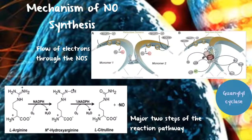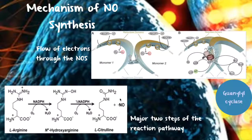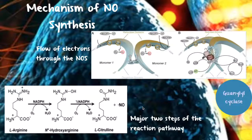In the second step, the enzyme oxidizes N-hydroxy-L-arginine to L-citrulline and nitric oxide. For this to occur, ferric oxide performs a nucleophilic attack on the carbon of the hydroxy guanidine of the L-NHA side chain, resulting in the formation of nitric oxide and L-citrulline. The activation of oxygen to a heme-bound Fe4+ occurs via one electron from NADPH and one from BH4.